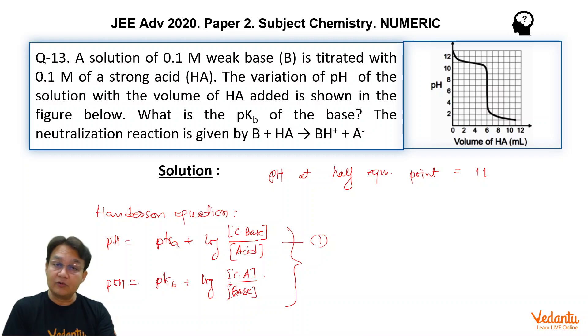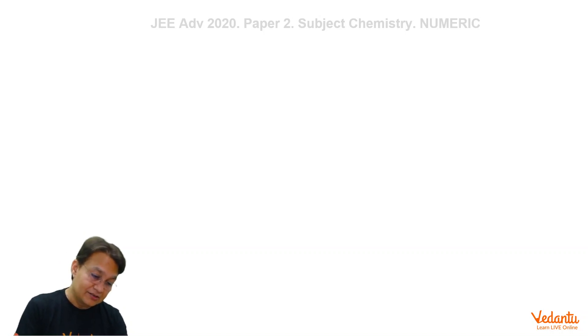But if we are quite accustomed to solving the problem for the basic buffer or the titration of base, then you should take the second equation. So let me solve it by both methods. The basic equation is base B is treated with H+ ion strong acid, it is getting converted into BH+. So this BH+ is conjugate acid and this is base.